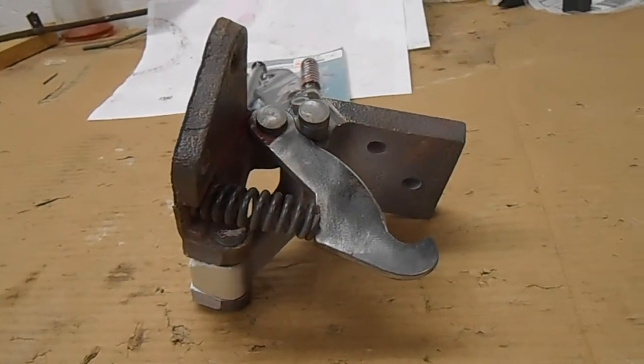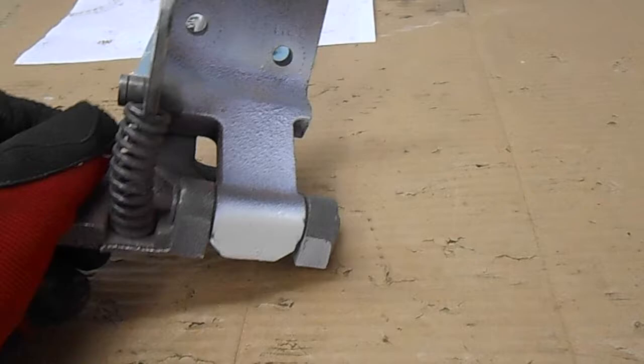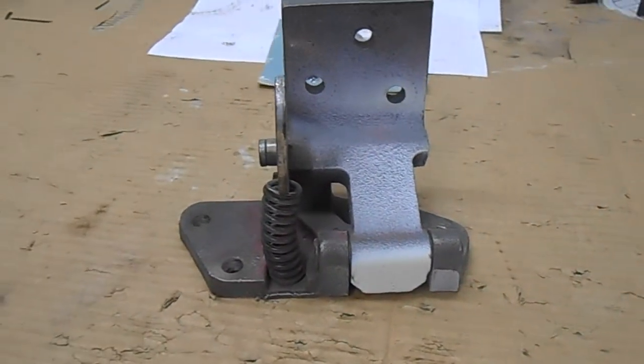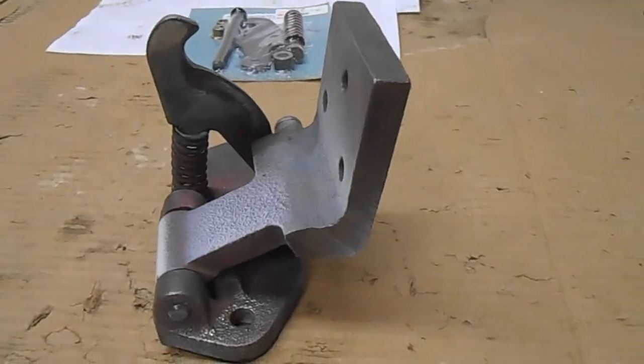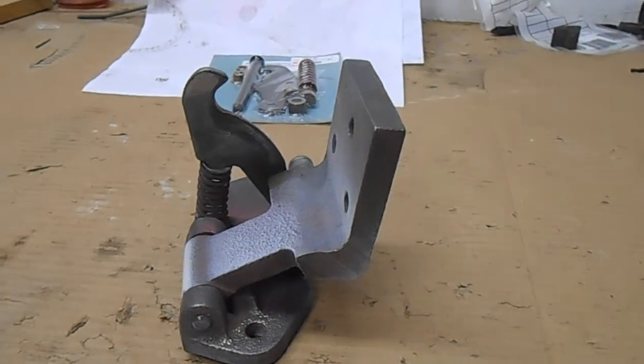Alright, today I'm going to work on this door hinge. This is the lower door hinge off of a 67 Mustang. This is a cast steel door hinge, it's not stamped steel.